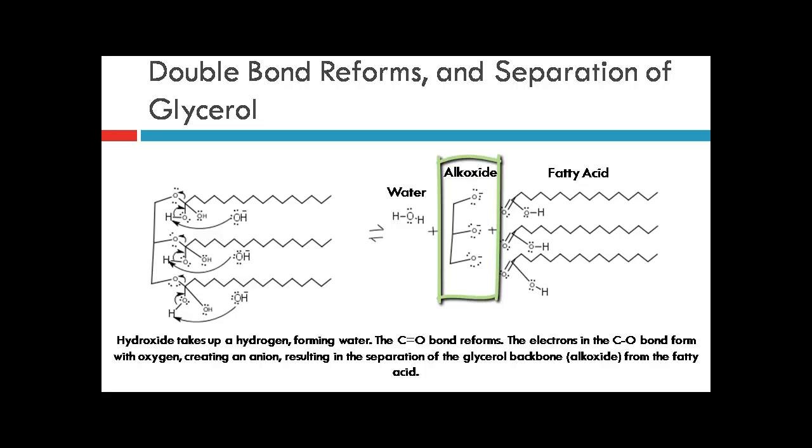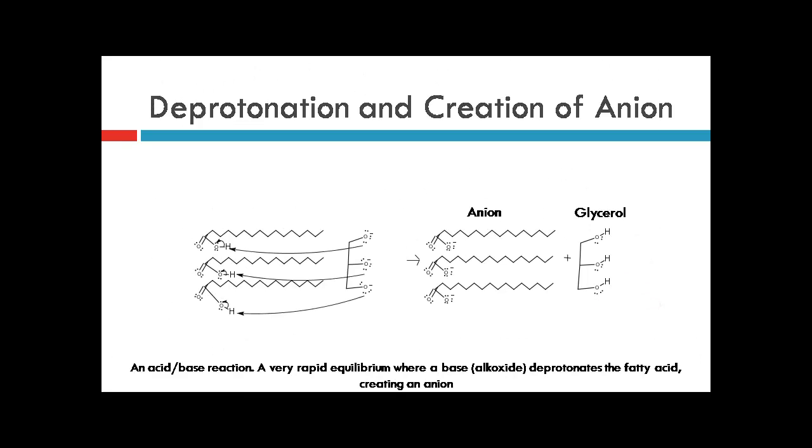This results in the separation of the glycerol backbone into an alkoxide, separate from the fatty acid. In the fourth step, an acid-base reaction occurs. The base, the alkoxide, deprotonates the fatty acid and turns it into an anion. Glycerol, which is one of the products of the overall reaction, forms.